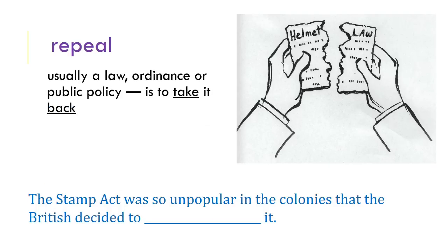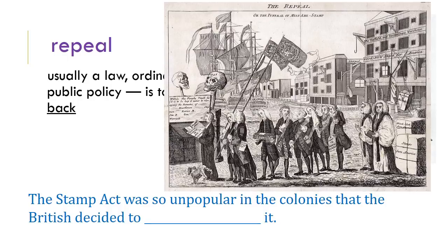Your next word is repeal. Repeal means a law, ordinance, or public policy that is taken back. In that cartoon, a helmet law is being ripped in half — it's being taken away. Parliament took away the Stamp Act because it was so unpopular in the colonies. The Stamp Act was a terrible act that really infuriated a lot of colonists, and Parliament actually listened to them this time. They also were not able to enforce it very well. So in the colonies, the British decided to repeal the Stamp Act.